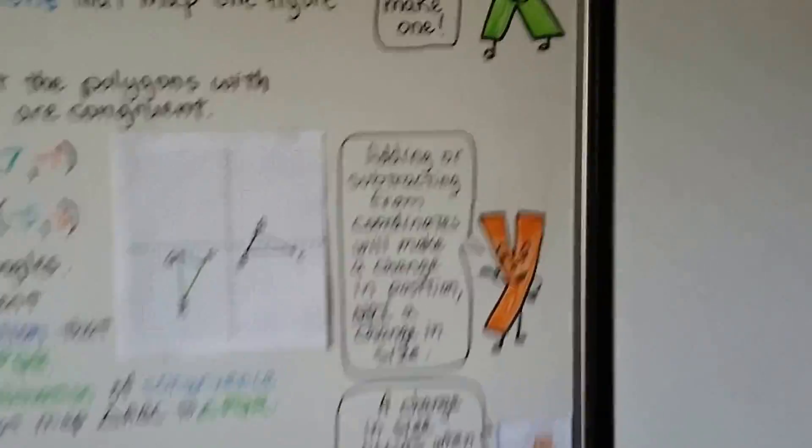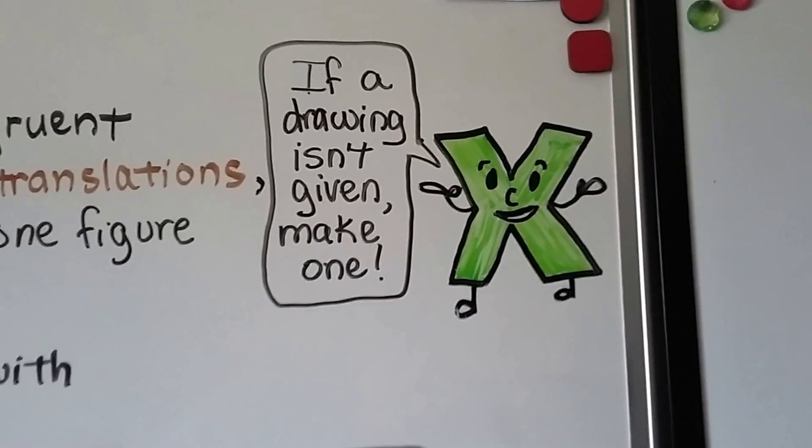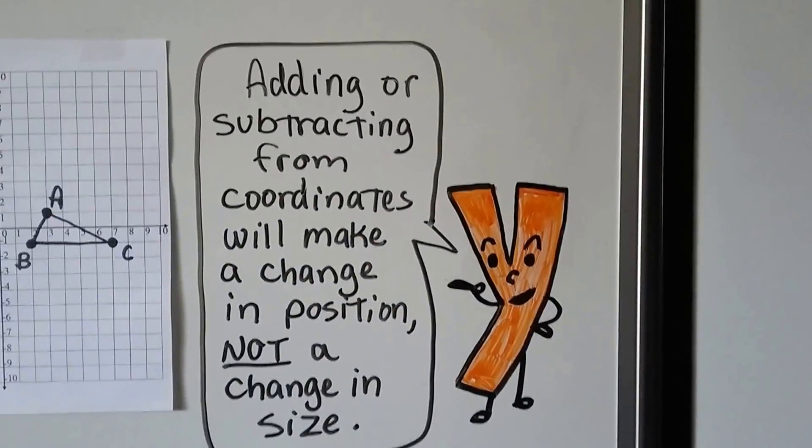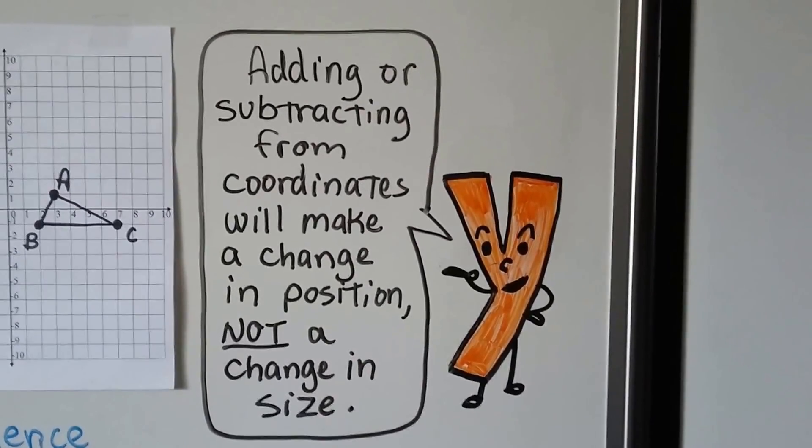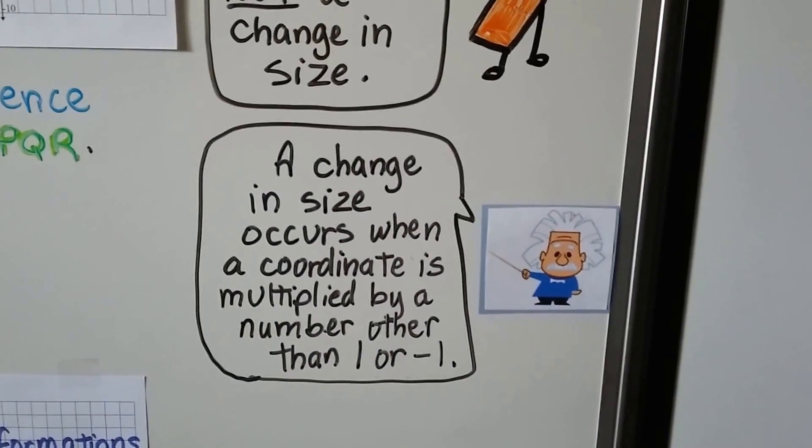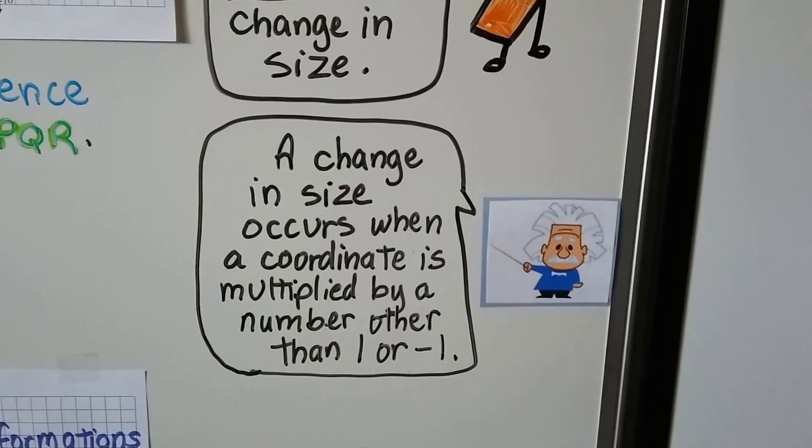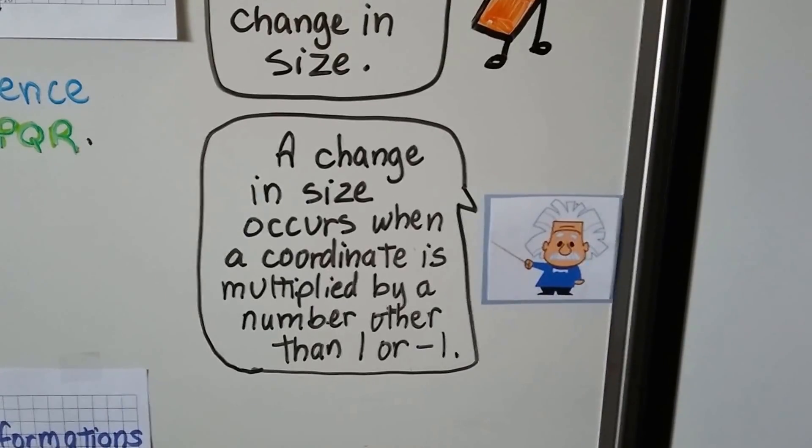So if a drawing isn't given, just make one. It might help you visualize what you need to do. And, adding or subtracting from coordinates will make a change in position, not a change in size. A change in size occurs when a coordinate is multiplied by a number other than 1 or negative 1. Then it would be a dilation, wouldn't it? A change in size.